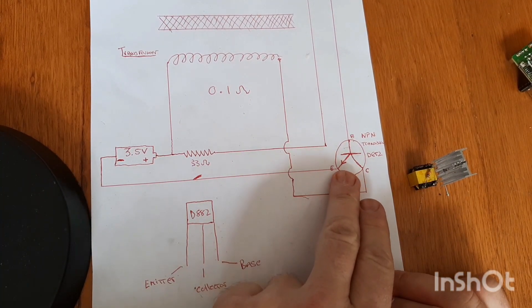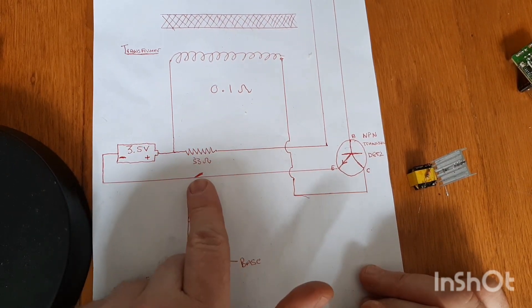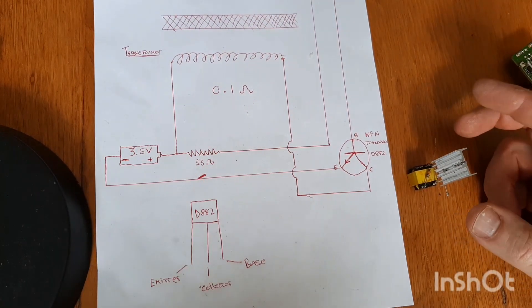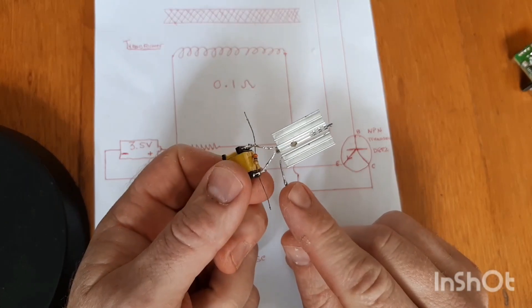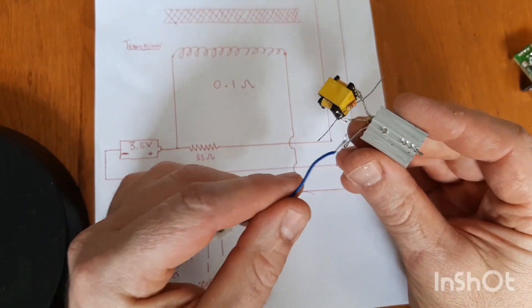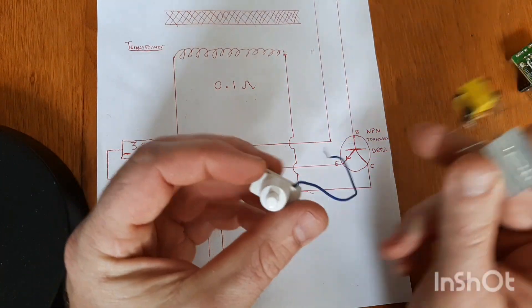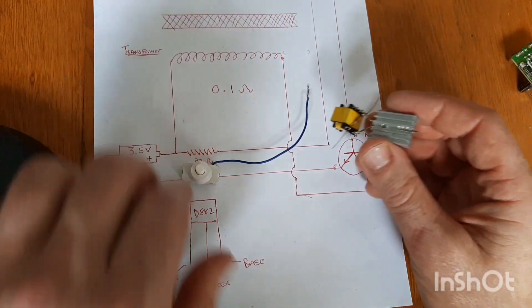Now we need to connect our emitter to the negative side of the battery. I'm just going to put a switch in series. Here's our emitter. We're going to connect the switch to the emitter, and then it's going to come out the other side and go to our battery.